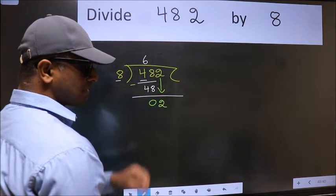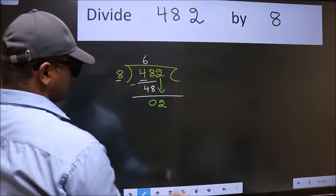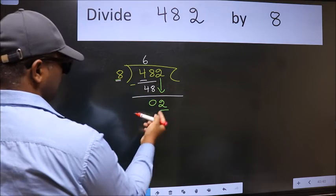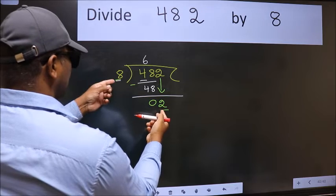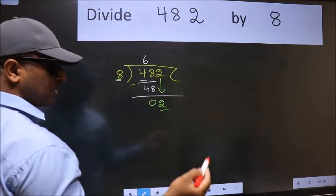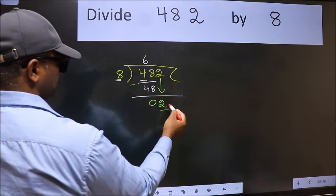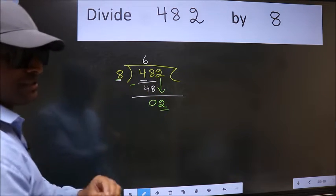the mistake happens and the mistake is this: Here we have 2 and here 8. 2 is smaller than 8, so what many do is they directly put a dot and take 0, which is wrong.